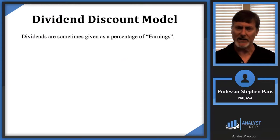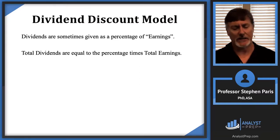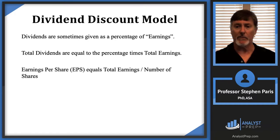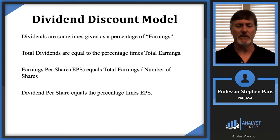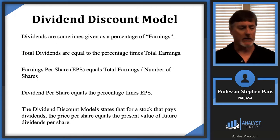Sometimes the problem won't give you dividends directly. Dividends might be given as a percentage of earnings — for example, dividends are 2% of earnings, so total dividends will be 2% of total earnings. For companies, you have total earnings, then earnings per share, which is total earnings divided by the number of shares outstanding. The dividend per share would then be equal to that percentage — say 2% — times earnings per share. The dividend discount model states that for a stock that pays future dividends, the theoretical price per share is equal to the present value of the future dividends per share.